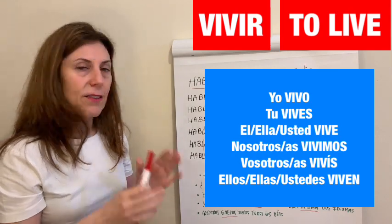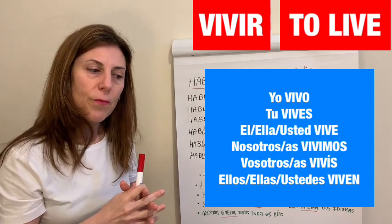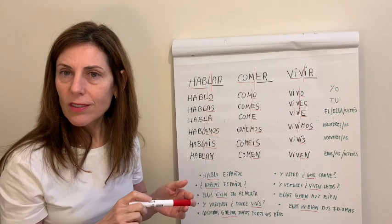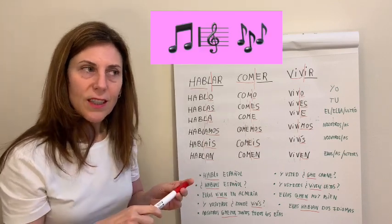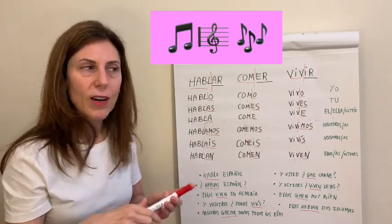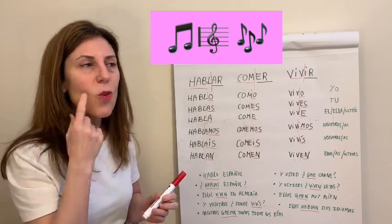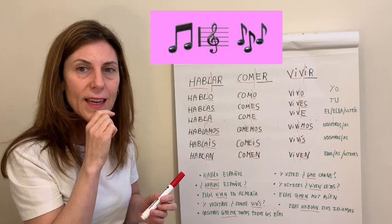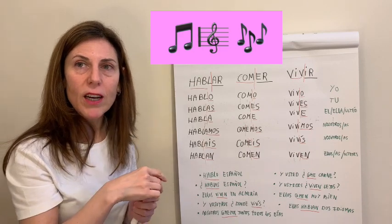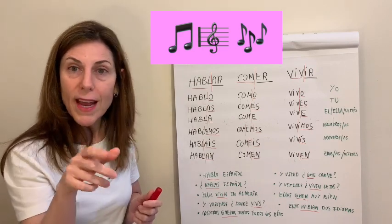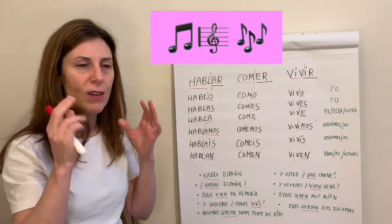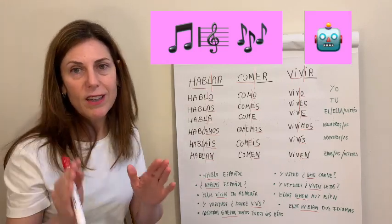The best way to practice is probably listening to some songs and looking at the lyrics. There are a lot of verbs in songs — look at a paragraph, identify where the verb is, and think about what tense it is and who it refers to. It may take a little while, but it's a good way to retain this information, because otherwise it can be very robotic.